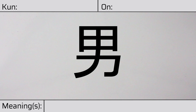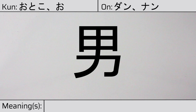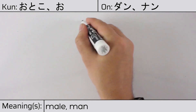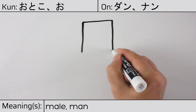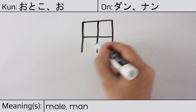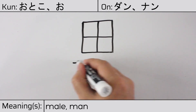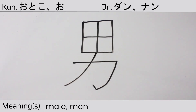Welcome to this lesson on Japanese kanji. Today, we'll be discussing this character. This kanji has kunyomi or Japanese readings of otoko or o, and it has onyomi or Chinese readings of dan or nan. This character has the meanings male or man. Here is the stroke order.